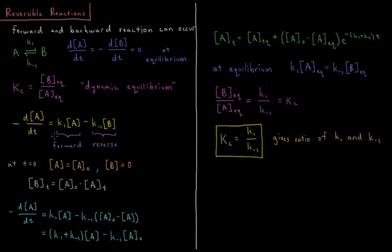When that is not the case, we have our rates to determine how fast concentrations are changing. Our reaction rate, minus dA/dt, equals K1 times the concentration of A minus K-1 times the concentration of B. Here we are assuming that the forward and reverse reactions are first order in A and B respectively.